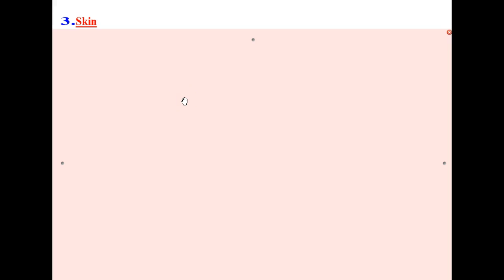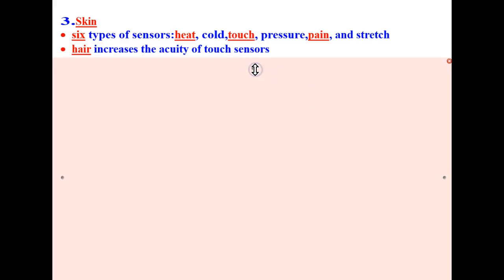Next let's take a look at the sense of touch with our skin. We have six types of sensors for heat, cold, touch, pressure, pain, and stretch. Hair on our skin increases the acuity of touch sensors. Ticklishness seems to be a hypersensitivity of the touch receptors.